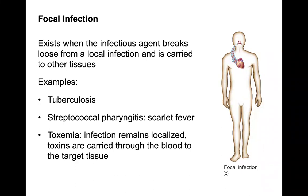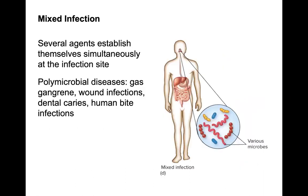A focal infection is a local infection that has manifested into a systemic infection — for example, something in the oral or nasal passageways that gets into the systemic system and can affect the heart or bloodstream, leading to secondary site infections. Mixed infections occur when several agents establish themselves simultaneously at the infection site. Polymicrobial diseases include gas gangrene, wound infections, dental caries, and human bite infections.